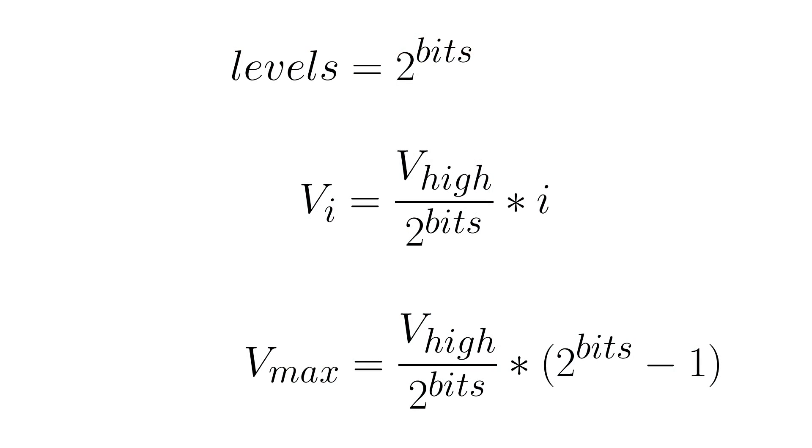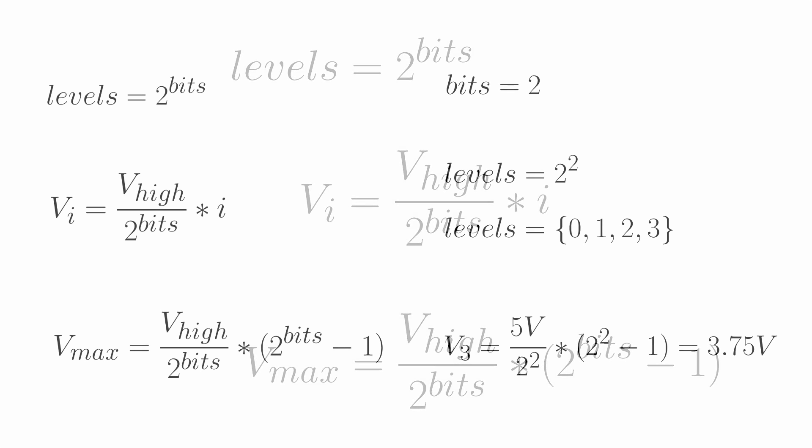The count of bits determines the levels we can get. The count of levels is 2 to the power of bit count. The voltage for each level is the high value of your circuit, like 5 volts, divided by the 2 to the power of bits times the level. Since we start to count the levels from zero, the highest voltage you can get out of this circuit is not the high value of your microcontroller.